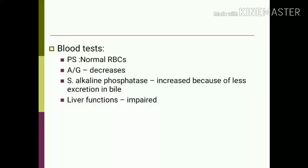Blood tests in hepatic jaundice: peripheral smear shows normal RBCs as the hemolytic component is absent. The albumin-globulin ratio decreases because of liver damage. Serum alkaline phosphatase is increased due to reduced excretion in the bile, and liver functions are impaired.